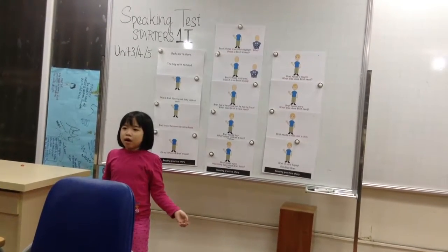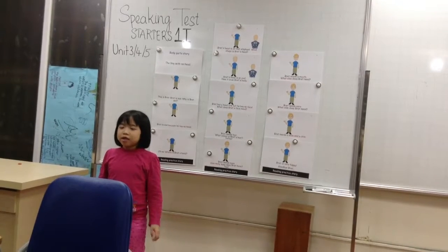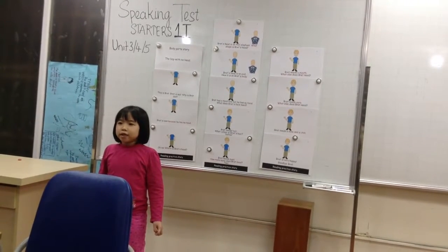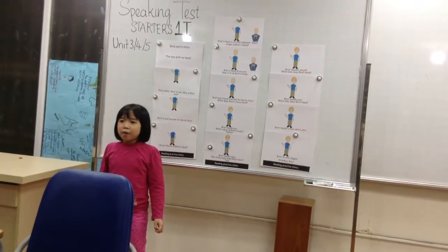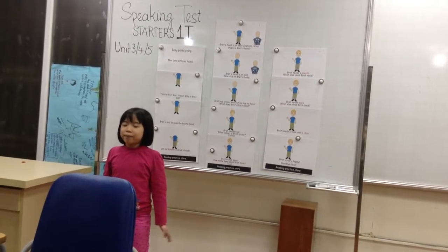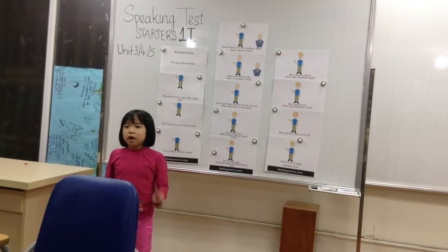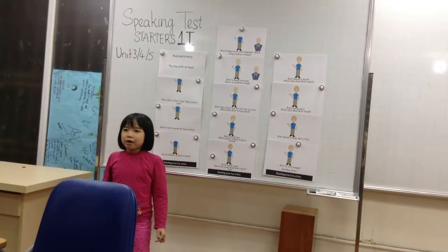What color is Brain's head? Yellow. How many eyes does Brain have? Two.